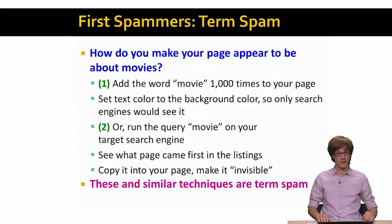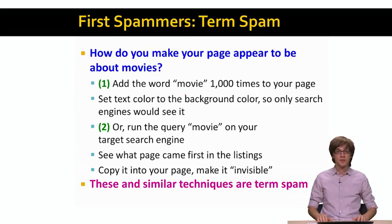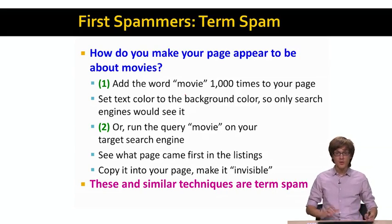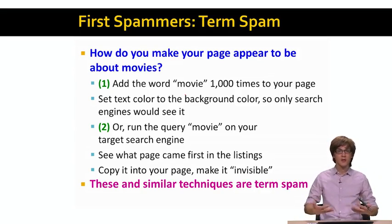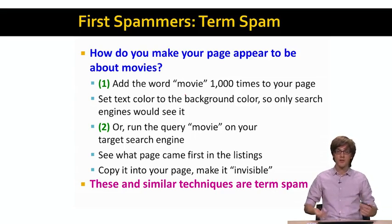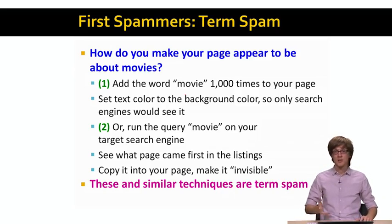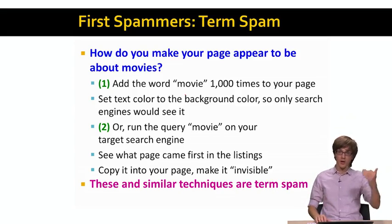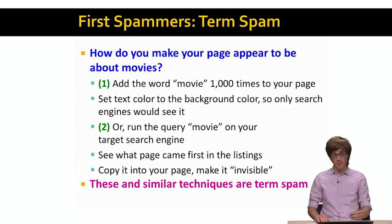Here is how the first spammers did this — it is called term spam. For our t-shirt seller, he creates a web page and wants it to really seem to be about movies. So he can take the word 'movie' and insert it 1,000 times in the web page. In the early days of the web, you would have a web page where on top was the legitimate text, and at the bottom was a huge list of words whose text color was the same as the web background color. So they wouldn't bother the user, but the search engine would see these words and think the page is all about movies, and rank it higher.